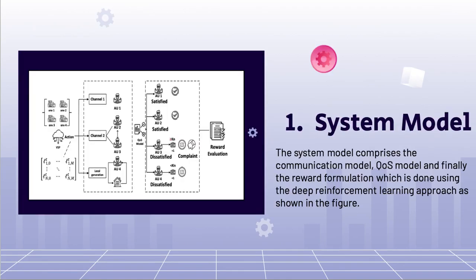Starting with system model. The system model comprises of the communication model, the QOS model and finally the reward formulation which is done using the deep reinforcement learning approach as shown in the figure.